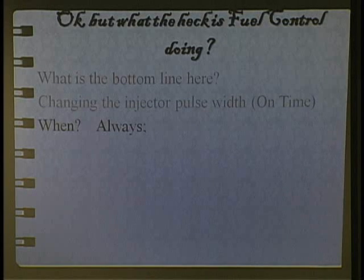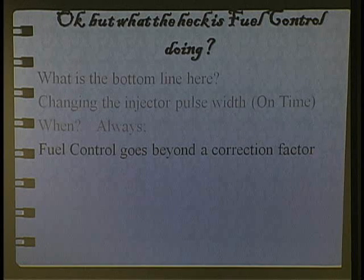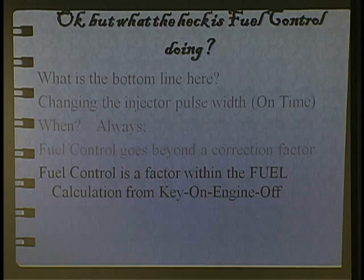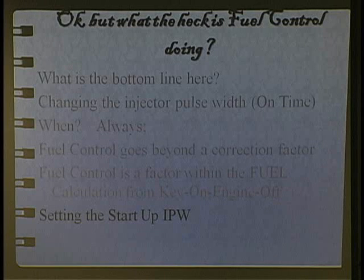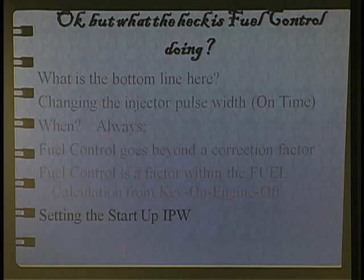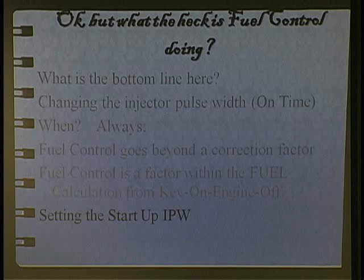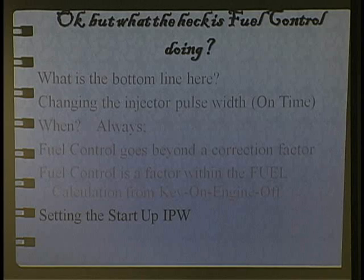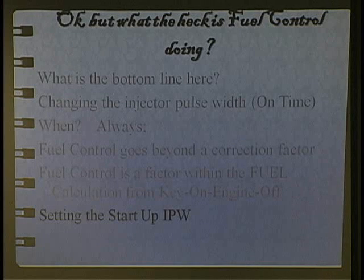The bottom line here is a changing of the injector on-time, always. Fuel control goes way beyond the correction factor — fuel control is a factor within the fuel control. So it starts with key-on engine-off. Don't we set the starting injector pulse width then? The formula is: engine RPM divided by maximum engine RPM, times manifold absolute pressure divided by barometric pressure — that is the basic injector squirt. At key-on engine-off we don't have RPM, so we're working with only half of the basic formula. That makes sense.